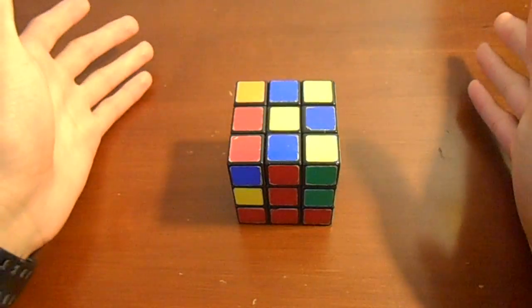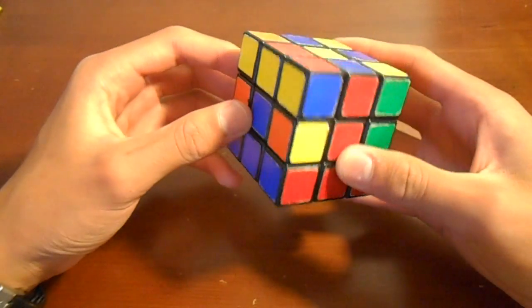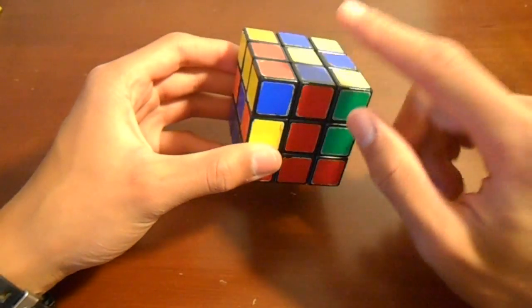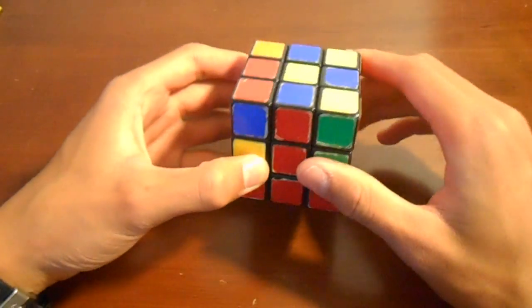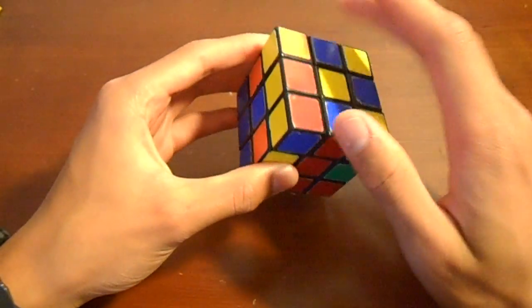So the first thing we're going to do is we need to find an edge piece to insert. So how we're going to figure that out is basically it's going to be any edge piece, not corner piece, without yellow on it, on the top layer.